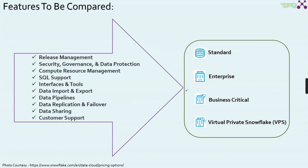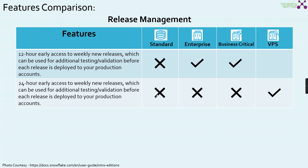I took those specific contents out of the documentation which are very important for us and put them together in the form of this presentation. Now we are going to compare features starting from the Release Management feature. Snowflake is releasing features typically once a week. If you are looking for 12-hour early access — meaning 12 hours before the weekly new release from Snowflake — then you must have at least the Enterprise version. If you want 24-hour early access, then you need to have the VPS version.